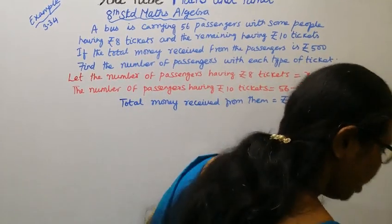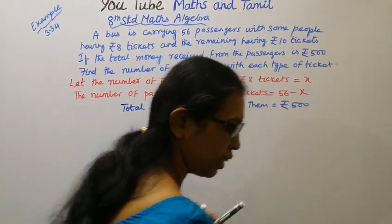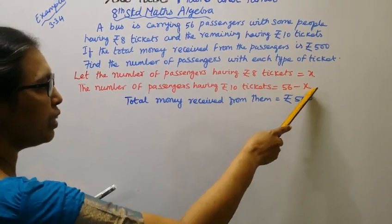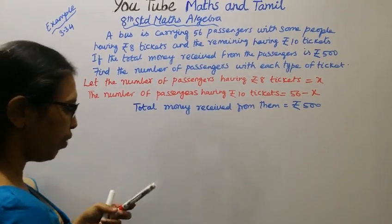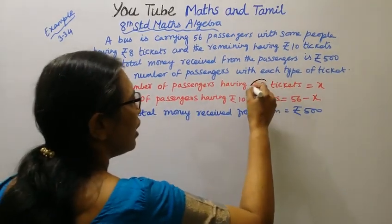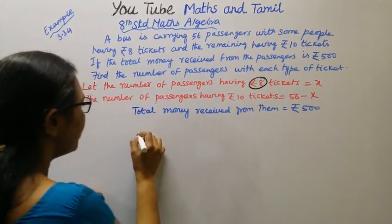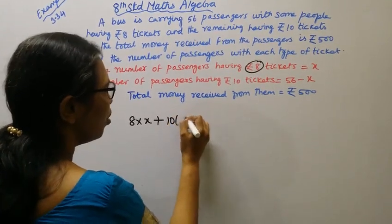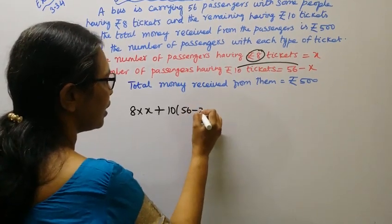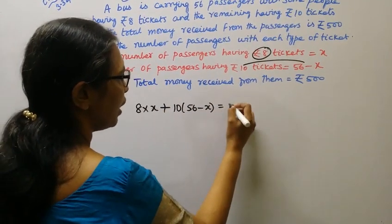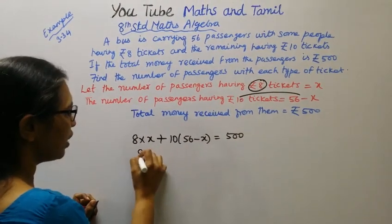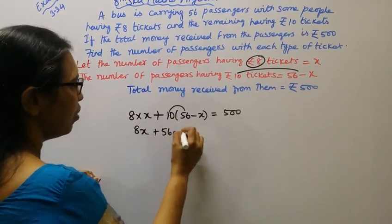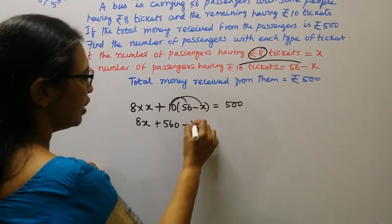X passengers have Rs. 8 tickets and (56 minus x) passengers have Rs. 10 tickets. Total money received is Rs. 500. Forming the equation: 8 into x plus 10 into (56 minus x) equals 500. That gives us 8x plus 560 minus 10x equals 500.